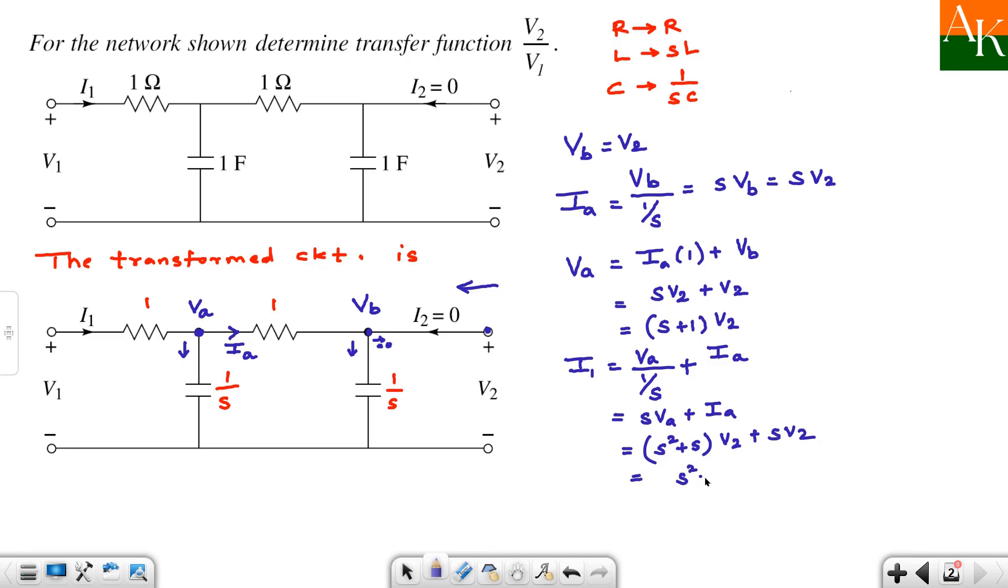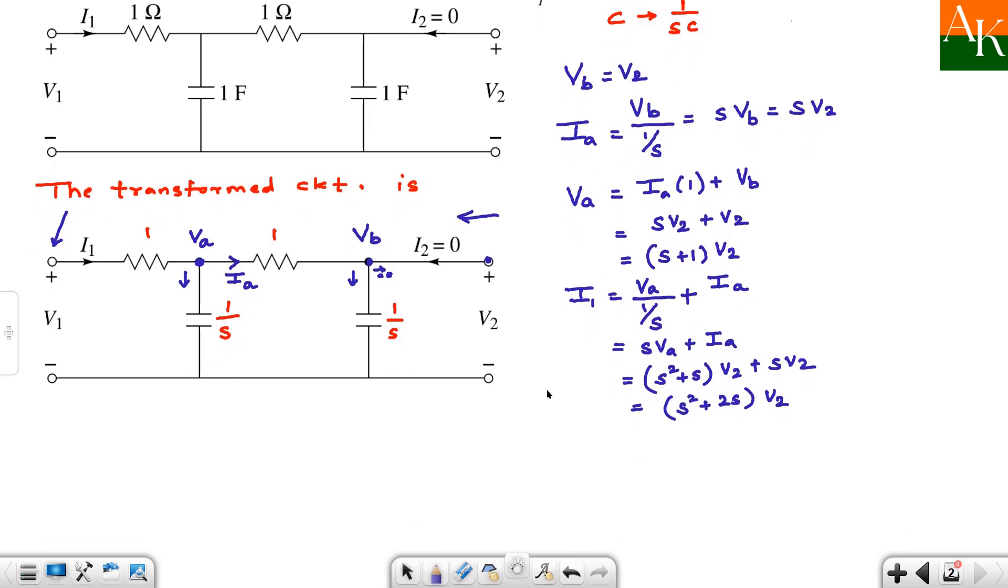So, you will write down S square plus S times V2. And now finally you have to write down about V1. So, how to write about V1? We have to write down about V1, and V1 can be written as I1 into this impedance. So, I1 into 1 plus this nodal voltage, that is nothing but Va. Now, we have to substitute for I1. So, this will become S square plus 2S times V2, and in place of Va we get S plus 1 times V2. So, you can write down S square, and S will be added. So, this will become 3S plus 1 times V2.